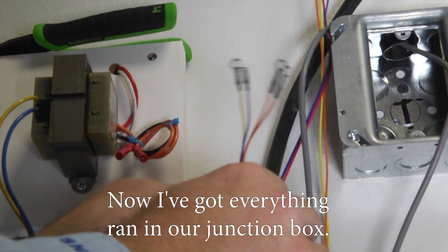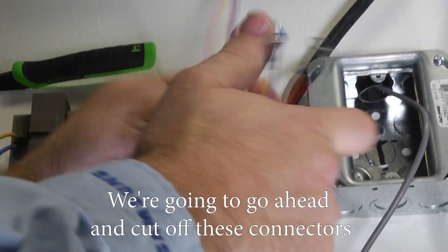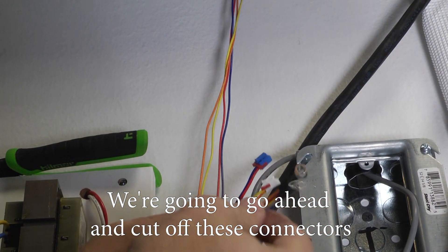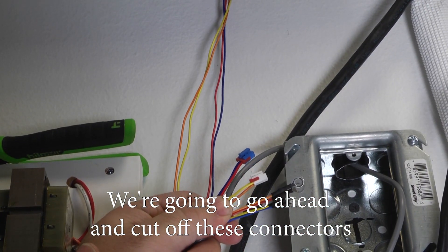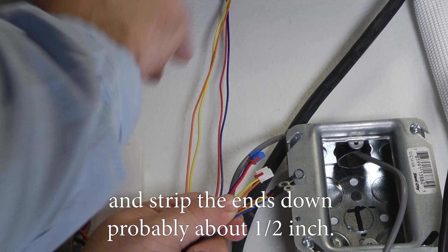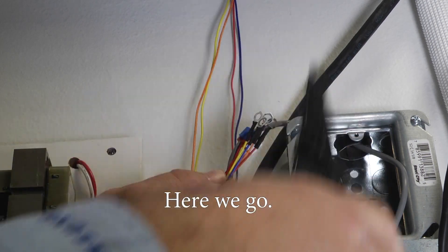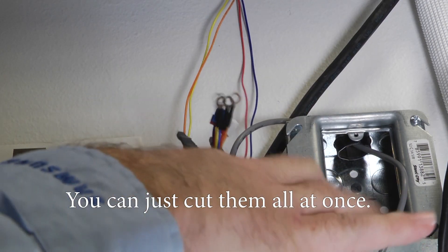So now I got everything ran in our junction box. We're going to go ahead and cut off these connectors and strip the ends down probably about a half inch. Here we go. You just cut them all at once.